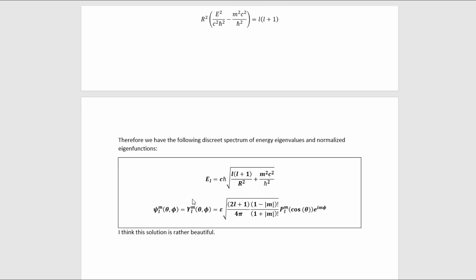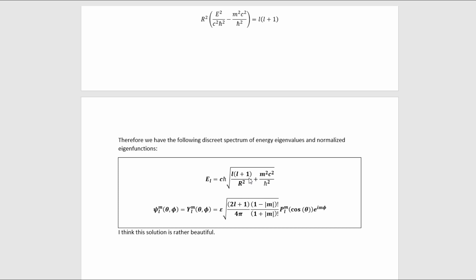We can then solve for those discrete energy levels just by solving for E in this equation, and that gets us this. And of course, because the complete set of orthonormal solutions is the spherical harmonics, they must just be our wave function. So that is the complete solution to the Klein-Gordon equation for a relativistic scalar particle confined to a 2-sphere. So now you know how to solve the Klein-Gordon equation for a relativistic scalar quantum particle confined to a 2-sphere, which is really cool.